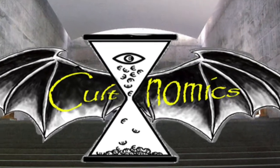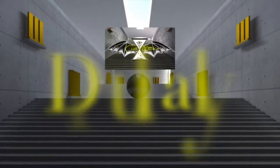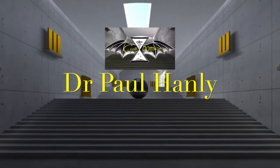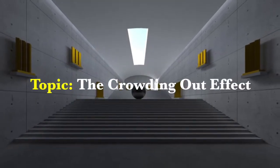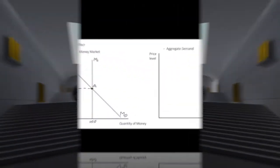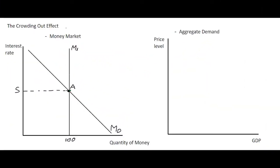Hi guys, and welcome to Cultnomics. My name is Paul Hanley, and today I'm going to be chatting to you about fiscal policy and the crowding out effect. In this video we're going to look at one of the drawbacks of fiscal policy referred to as the crowding out effect. To do that we have two markets represented: a money market showing money supply and money demand on the left hand side.